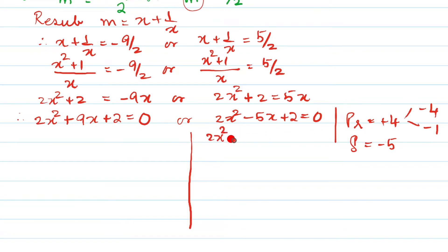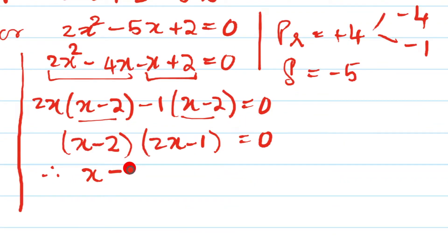So let us write it 2x² - 4x - x + 2 = 0. Understanding right? Let us group this. So 2x(x - 2) and here -1(x - 2) and that's equal to 0 and now we will take this as the common factor and we will have (x - 2)(2x - 1) = 0 and therefore I will have x - 2 = 0 or 2x - 1 = 0.